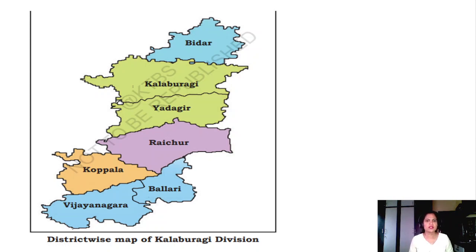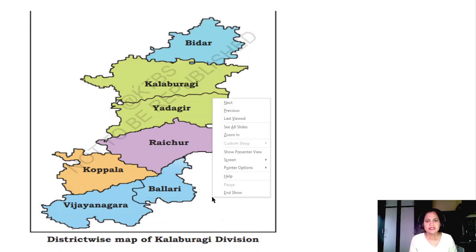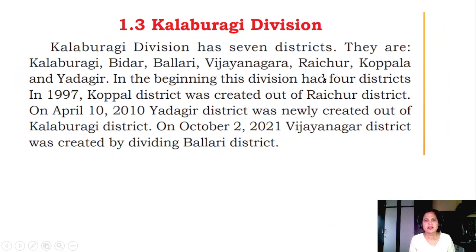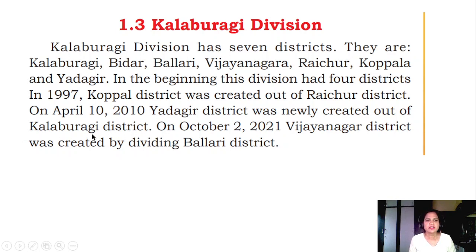They used to call it Gulbarga; now they renamed it Kalburgi. In the beginning, this division had 4 districts in 1997. Kopla district was created out of Raichur district. On April 10, 2010, Yadgir district was newly created out of the Kalburgi district.